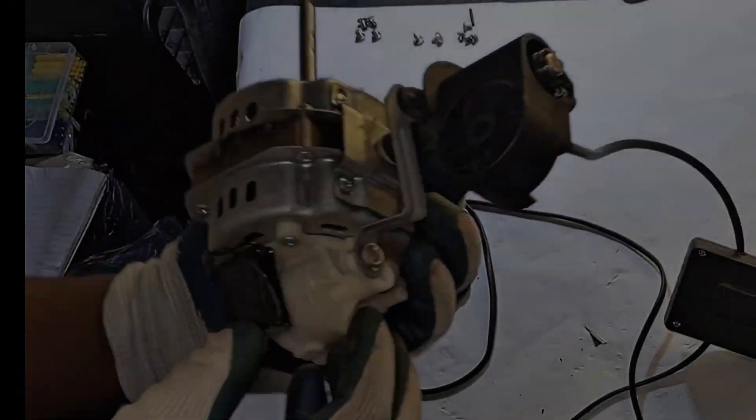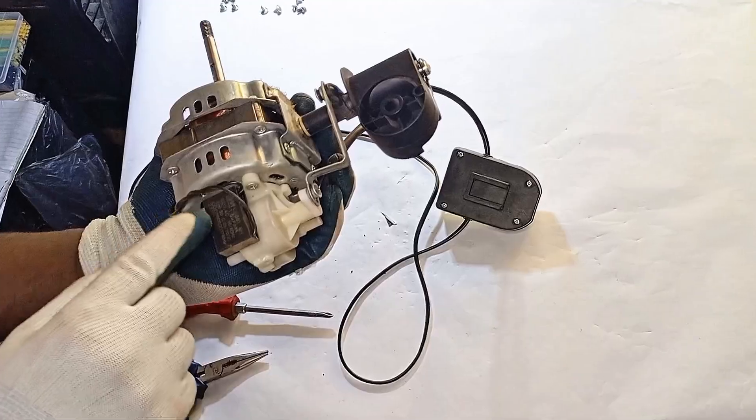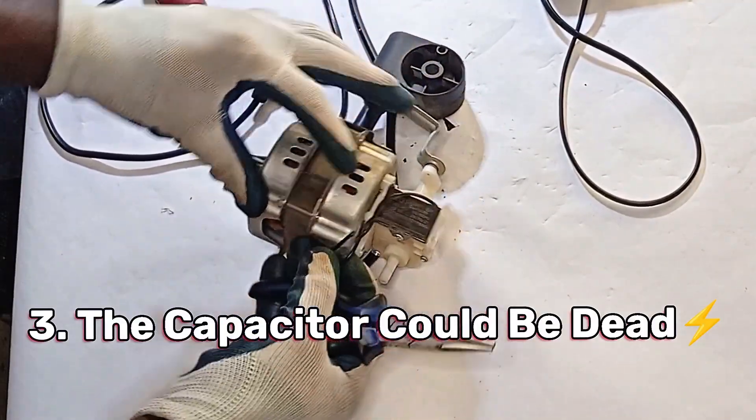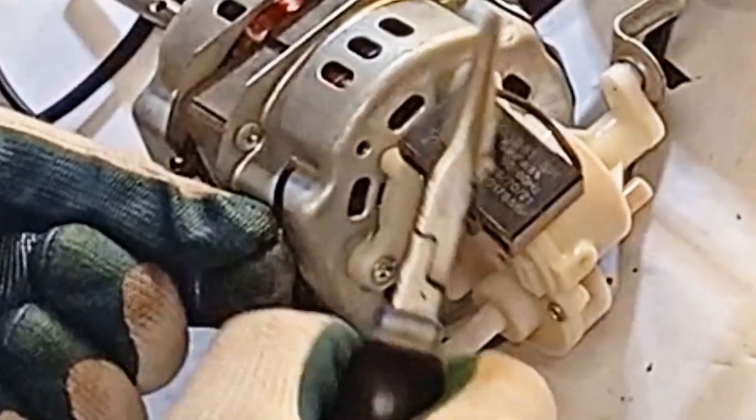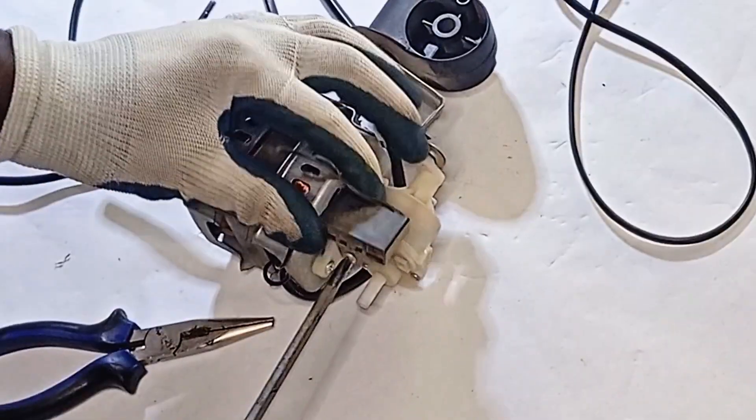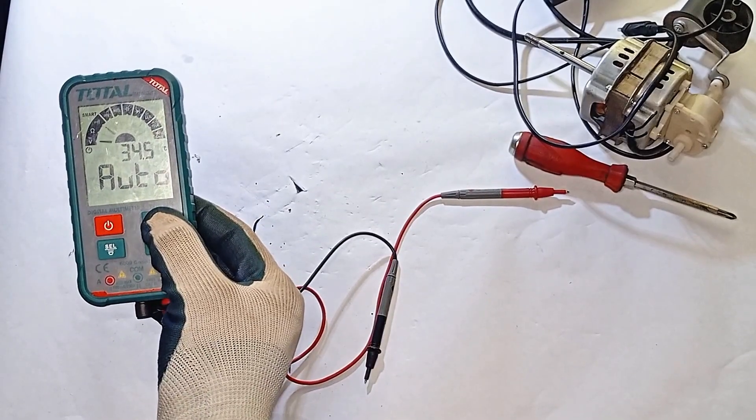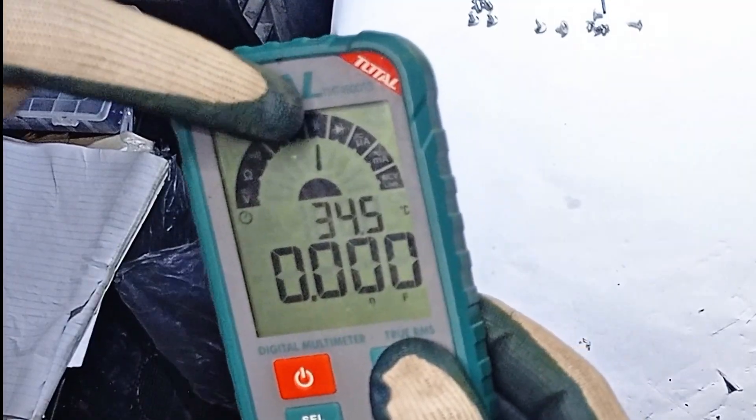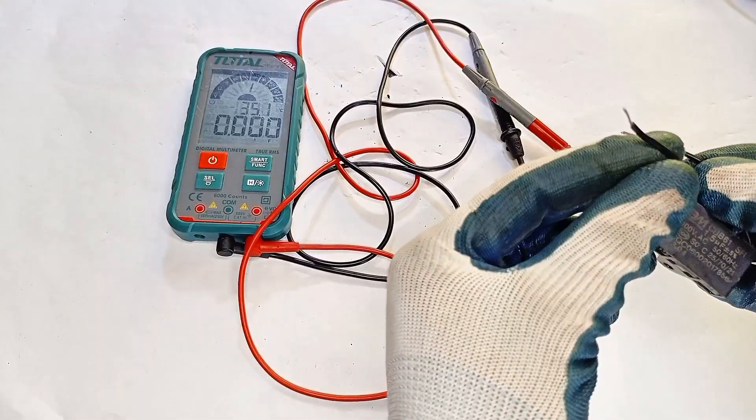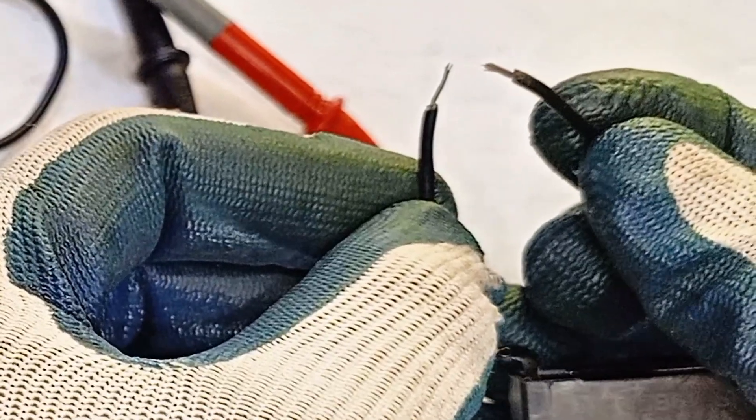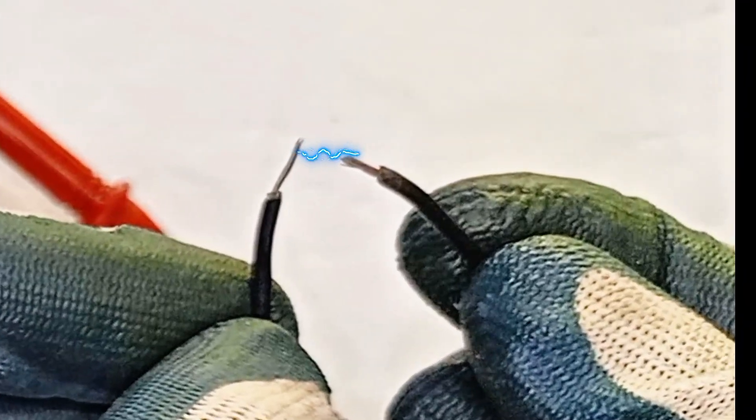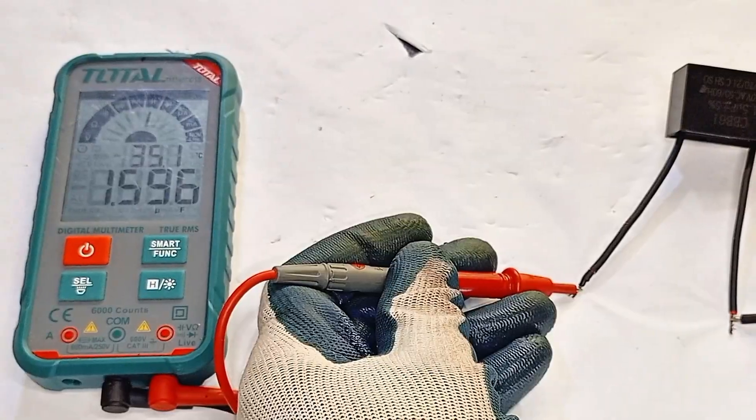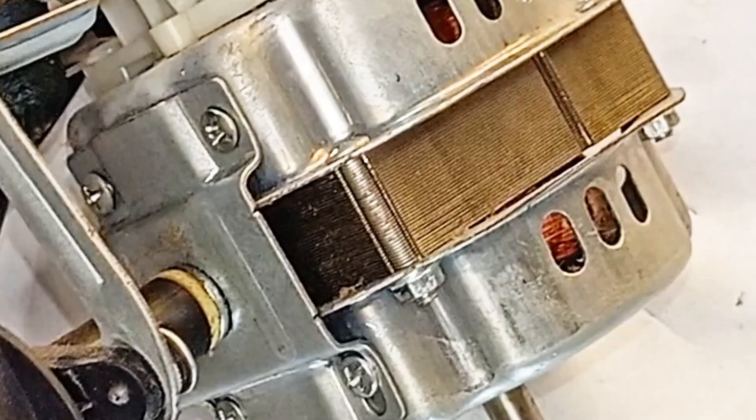Nothing wrong here, but that only deepens the mystery. Time to turn our attention to the capacitor. Now let's see what the multimeter has to say. This test could confirm if the capacitor is truly killed. Set your multimeter to capacitance mode. Short the terminals to discharge the capacitor before testing. The label says 1.5 microfarads—capacitor is good. Let's move on and see what else could be stopping this fan.